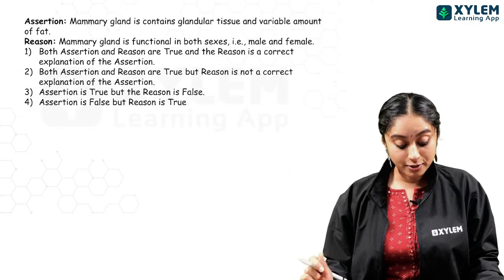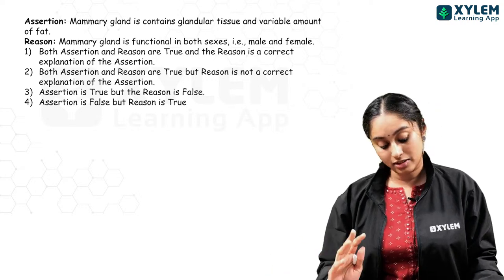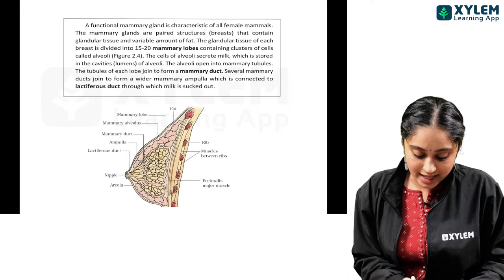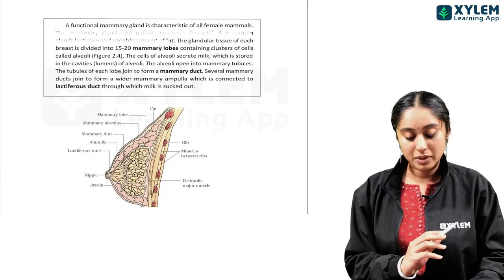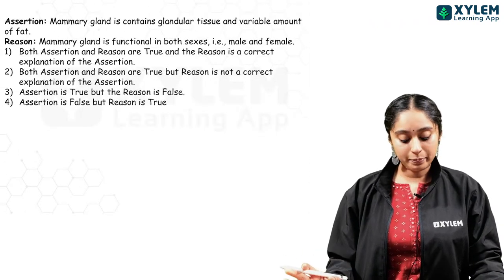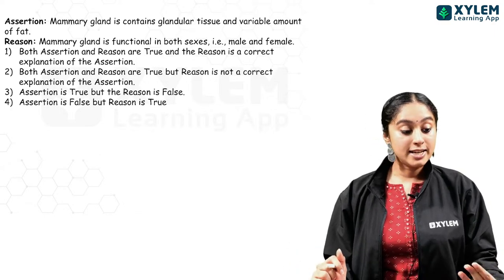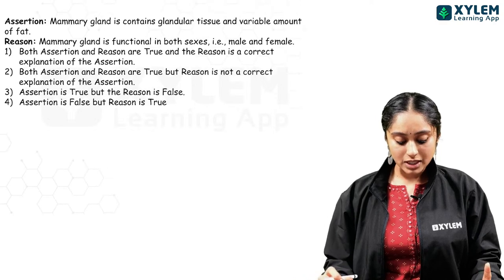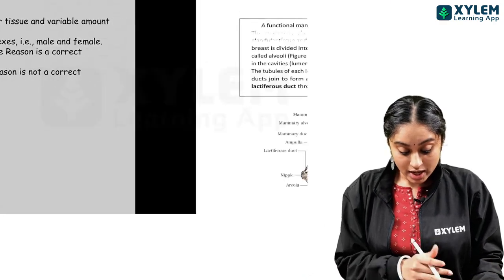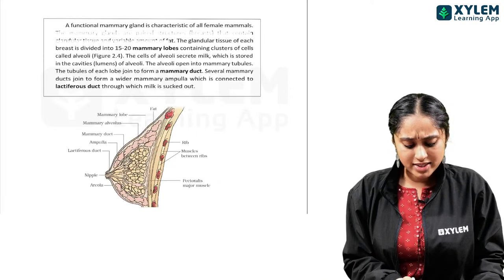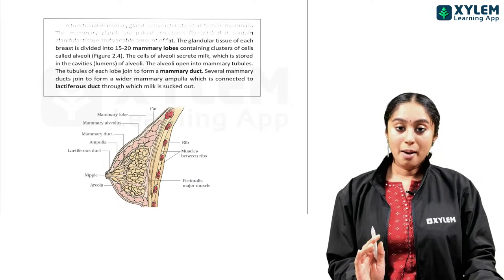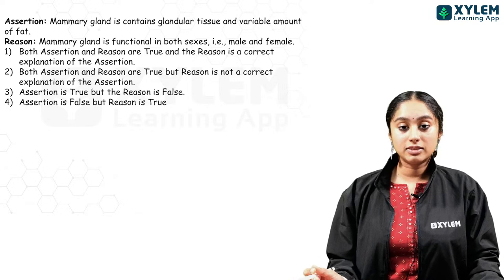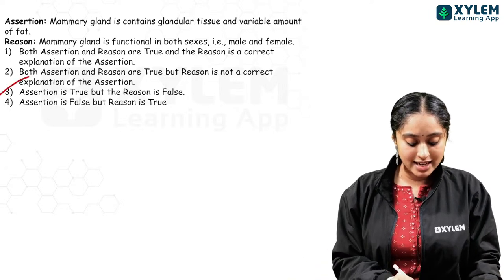Next is an assertion and reasoning question. The assertion says: mammary gland contains glandular tissue and variable amount of fat. The reason states it is functional in both sexes. However, as NCERT states, a functional mammary gland is characteristic of all female mammals — in males, it is not functional. So the reason is wrong.